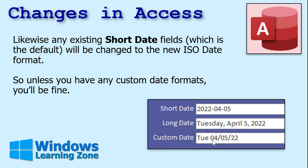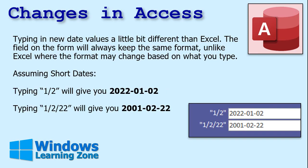This one had a custom date format which kept the old format — month, day, year. So those are not going to change automatically. Now, typing in new date values in Access is going to be a little bit different from Excel.